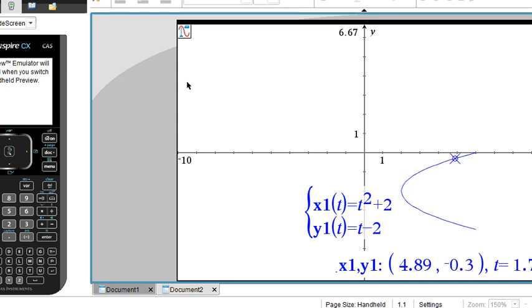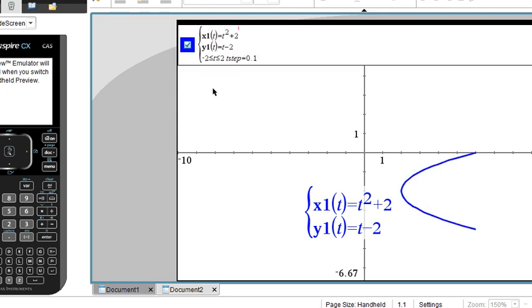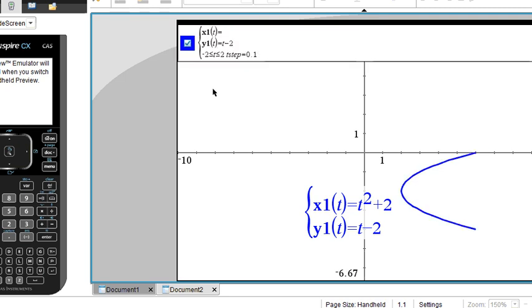And you can do a trace on this graph just like you can do a trace on any other graph. You can trace the curve and there are all the points on the curve from negative 2 to 2. Which leads me to ask some interesting questions.